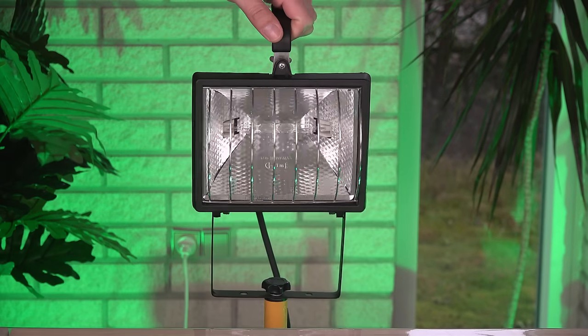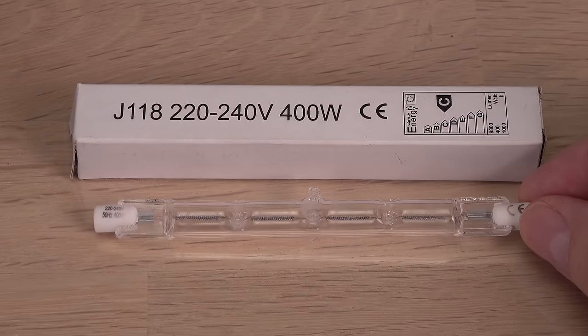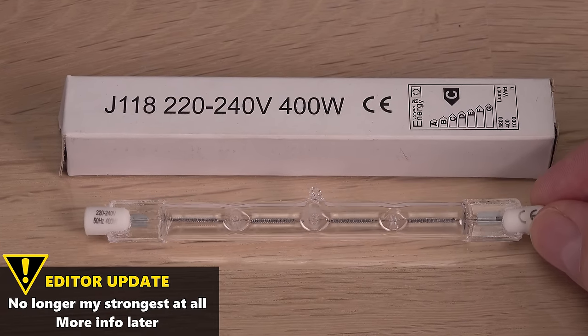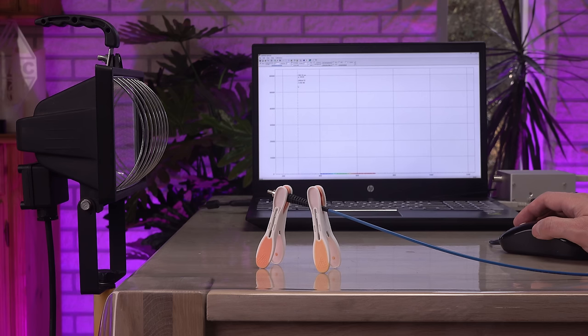This is my strongest halogen lamp. With a 400 watt quartz bulb, I believe it is a perfect candidate for visualizing the invisible issue with halogen lamps. To see the spectrum of light coming from it, I will use my USB spectrometer.